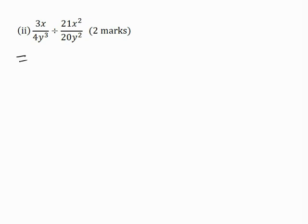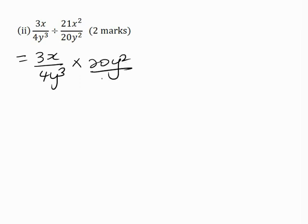I'll write 3x all over 4y cubed, and I want to change this division sign to a multiplication sign, but by doing so I need to invert this algebraic term. So this becomes 20y squared all over 21x squared. Now I want to simplify the coefficients: 3 into 3 is 1, 3 into 21 is 7, 4 into 4 is 1, 4 into 20 is 5. So I'm going to multiply numerator by numerator, denominator by denominator.